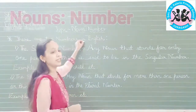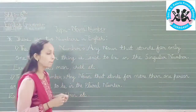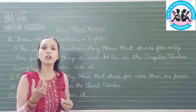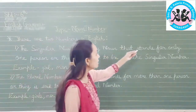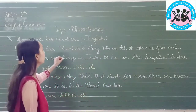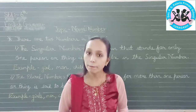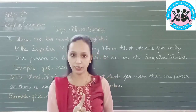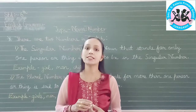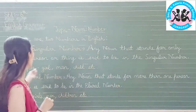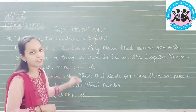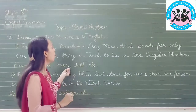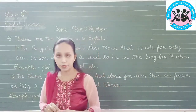There are two numbers in English. The first is the singular number. Now what do you mean by singular number? Singular means one. Any noun that stands for only one person or thing is said to be in the singular number. For example: girl, man, child. When you are talking about only one girl, only one child, only one man, we say that it is in the singular number.